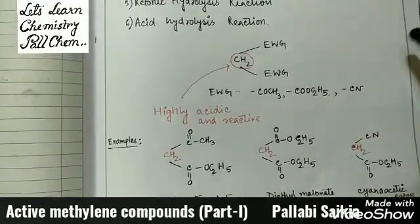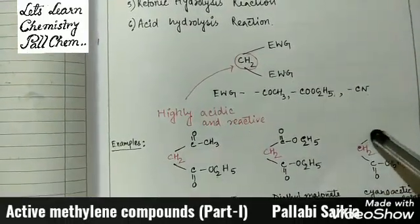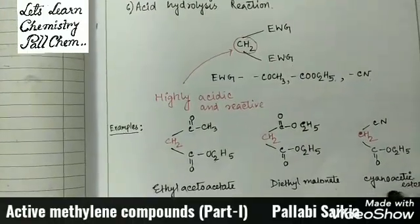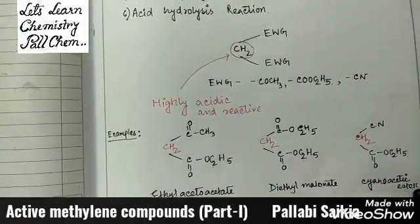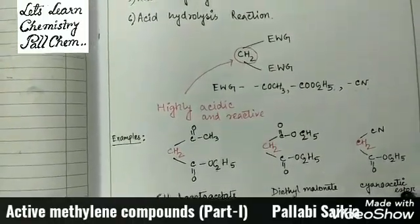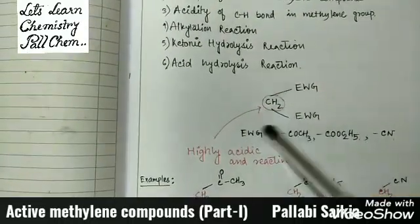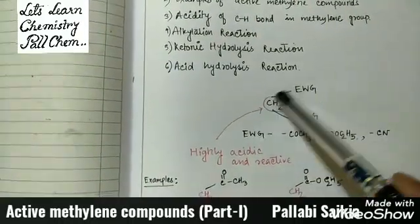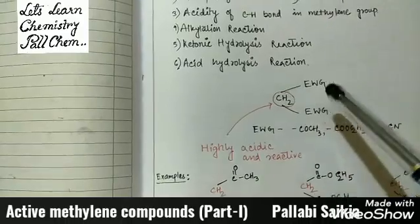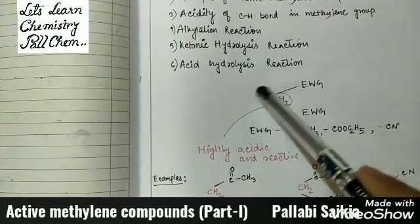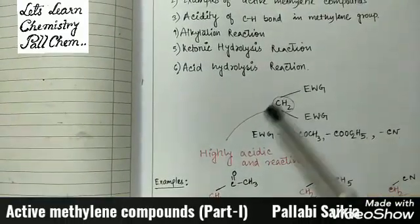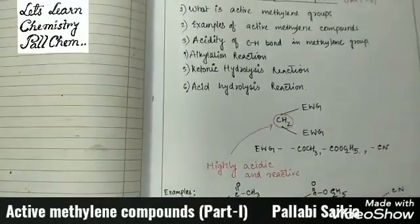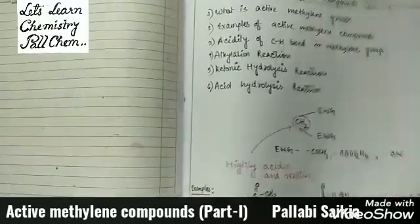If the active methylene group has a CN group and COOC2H5, then it is cyanoacetic ester. Since this CH2 group is attached with two electron withdrawing groups, this CH2 group is highly acidic and reactive.